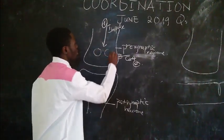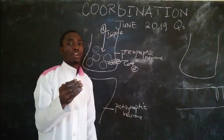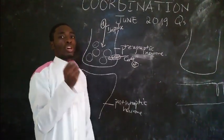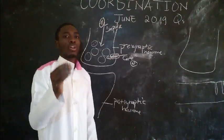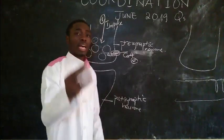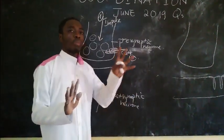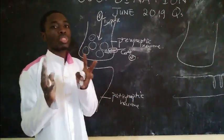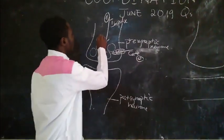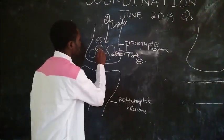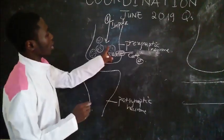Within the presynaptic neuron, we have vesicles that contain neurotransmitters. For GCE Advanced Level, the synapse used is a cholinergic synapse — meaning it uses acetylcholine as the neurotransmitter. You won't be using GABA (gamma-aminobutyric acid), epinephrine, or adrenaline. The vesicles contain acetylcholine.